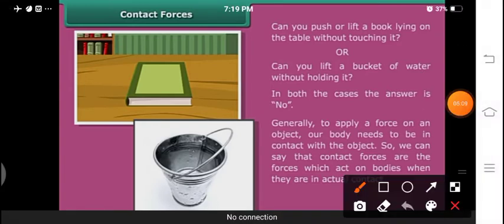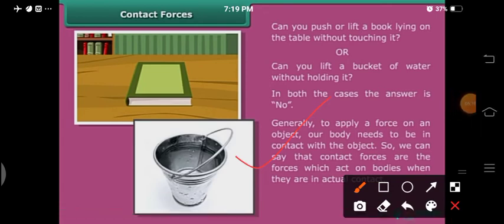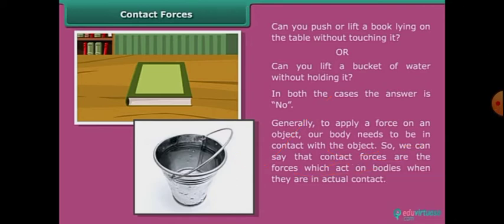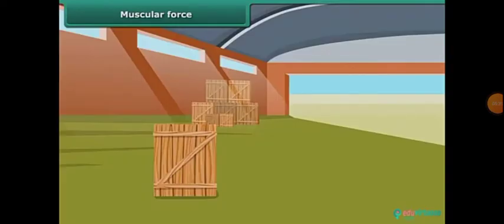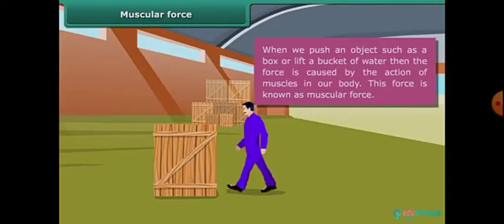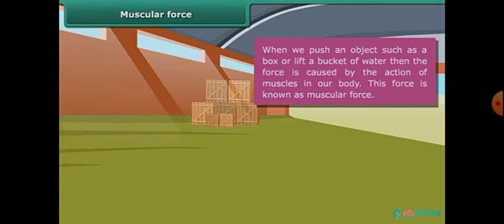To apply a force on an object, our body needs to be in contact with the object. So contact forces are the forces which act on bodies when they are in actual contact. These are of two types: muscular force and friction force. When we push an object such as a box, or lift a bucket of water, the force is caused by the action of muscles in our body. This force is known as muscular force.